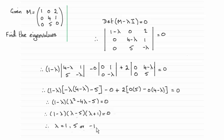So to do it, remember you've just got to work out the determinant of M minus lambda I, I being the identity matrix, and equate that to 0.